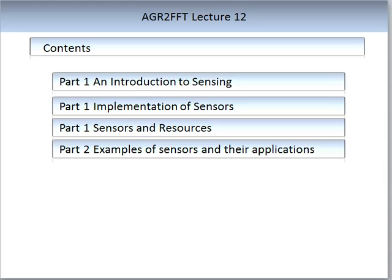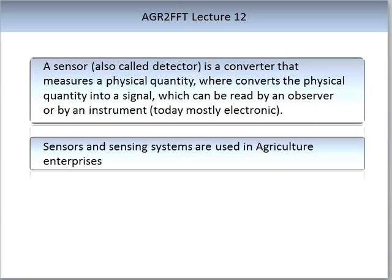A sensor is also called a detector. Think of a sensor as a converter that measures a physical quantity — that quantity is converted into a signal which can be read by an observer or by an instrument. A sensor does not need to be electronic, though there are many examples of electronic sensors. Sensors and sensing systems are used in agricultural enterprises.